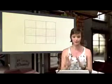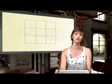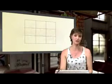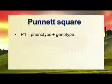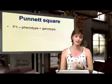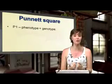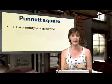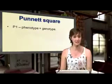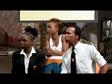The Punnett square is easy to draw — three columns, three rows. There is a specific order to follow in an exam, and you need to include all steps or you will lose marks. First, write down P1 or the parental generation — both the phenotype and the genotype of the parents. In our example, we have a homozygous tall and a homozygous dwarf. So the phenotype is tall and dwarf, and the genotypes are TT and tt.